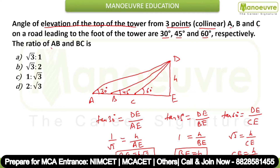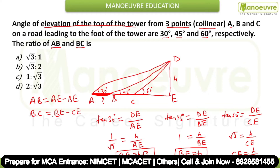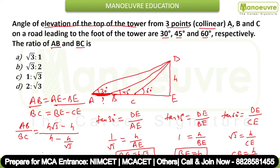We need to find the ratio AB upon BC. AB equals AE minus BE, which is H root 3 minus H. BC equals BE minus CE, which is H minus H upon root 3. When you solve AB upon BC, you get root 3 upon 1. So the ratio is root 3 is to 1, and your first option is the answer.